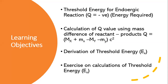First, let's look at the learning objectives. I will be discussing four major learning objectives in this video. The first is about the threshold energy for endoergic reactions, which must be required for such reactions. The second is how to calculate the Q value, which defines the nature of the reaction — endoergic or exoergic. If the reaction is endoergic, threshold energy is required to complete the nuclear reaction, and we will derive a simple equation for it.